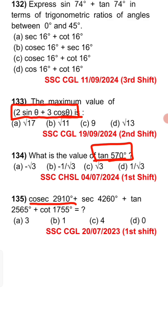cosec2910° + sec4260° + tan2565° + cot1755° equals what value. So check the 4 options. All the highest degree values are present. So what we do is apply the ASTC rule. We reduce the degrees to minimum degrees. If you subtract 360 degree multiples, all the degrees are reduced. So we apply the table value.